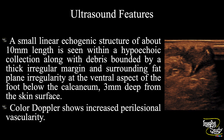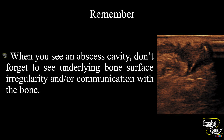In summary, a small linear echogenic structure of about 10 millimeters in length is seen within a hypoechoic collection along with debris, bounded by a thick irregular margin and surrounding fat plane irregularity at the ventral aspect of the foot below the calcaneum. The most superficial part of the fish bone was around three millimeters deep to the skin surface. Color Doppler shows increased perifocal vascularity. These features conclude this as a case of foreign body granuloma due to fish bone impaction with abscess formation. The take-home message: when you see an abscess cavity, don't forget to check the underlying bone — it may show irregularity with or without communication with the abscess cavity, as the inflammatory process may also involve adjacent bone if it persists for a long time.